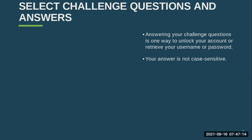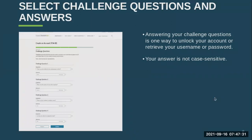Your next thing is going to be selecting challenge questions and answers. These will be used to unlock your account and retrieve your username and password — basically for account recovery. Your answer is not case sensitive, which is really good. Typical questions include things like: What was the name of your elementary school teacher? What was the name of the street you grew up on? What was your mother's maiden name? There are four different challenge questions.